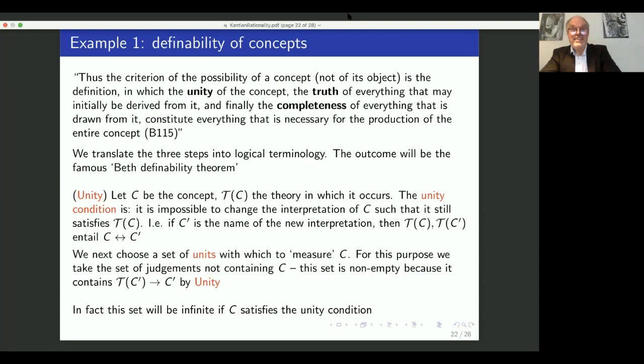So again, we see this triad, the three categories of quantity, where the second and the third part, plurality and totality, are reminiscent of the principle of sufficient reason, but we have the additional ingredient of the unity.